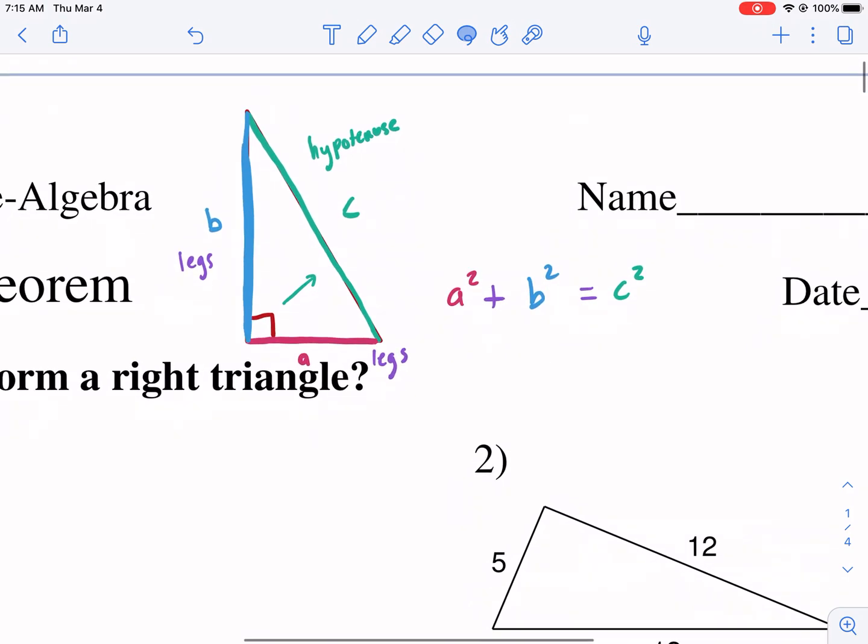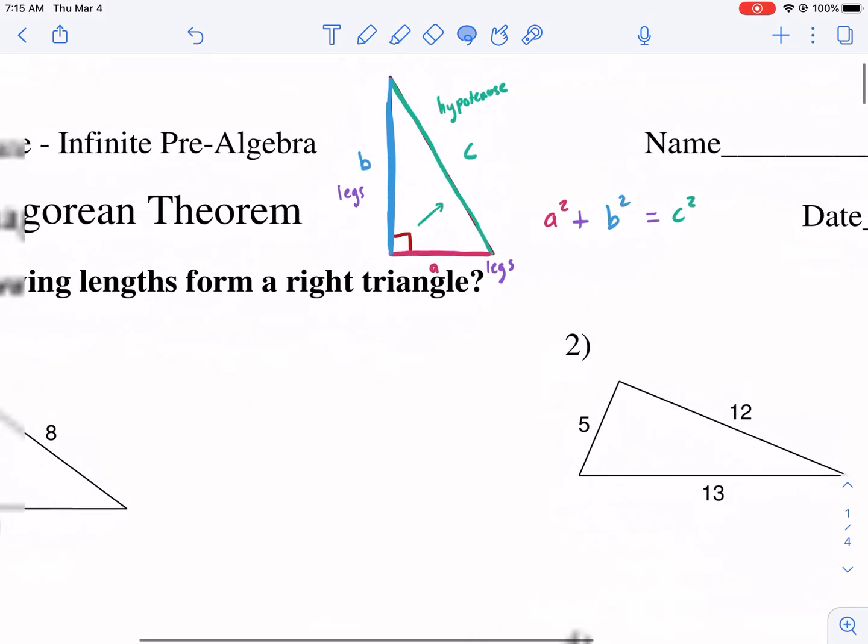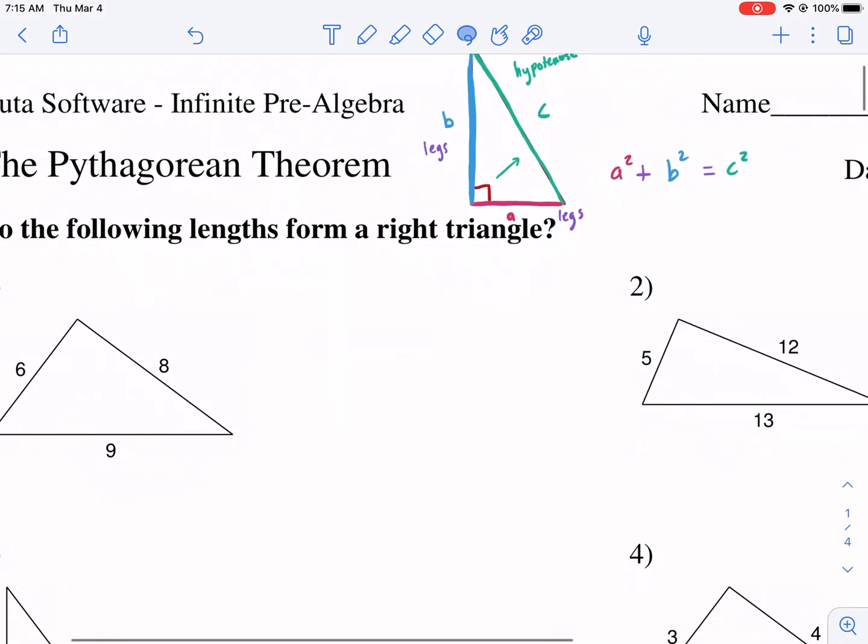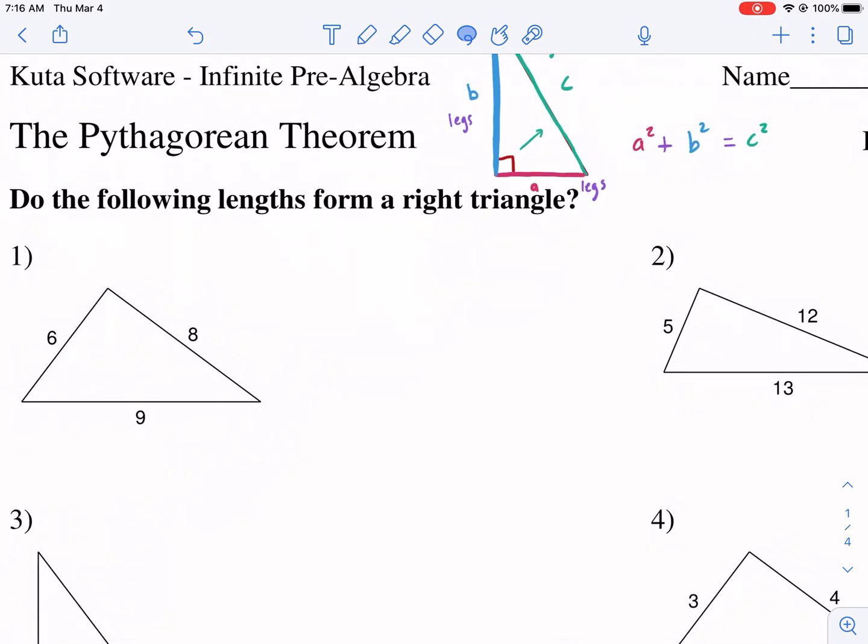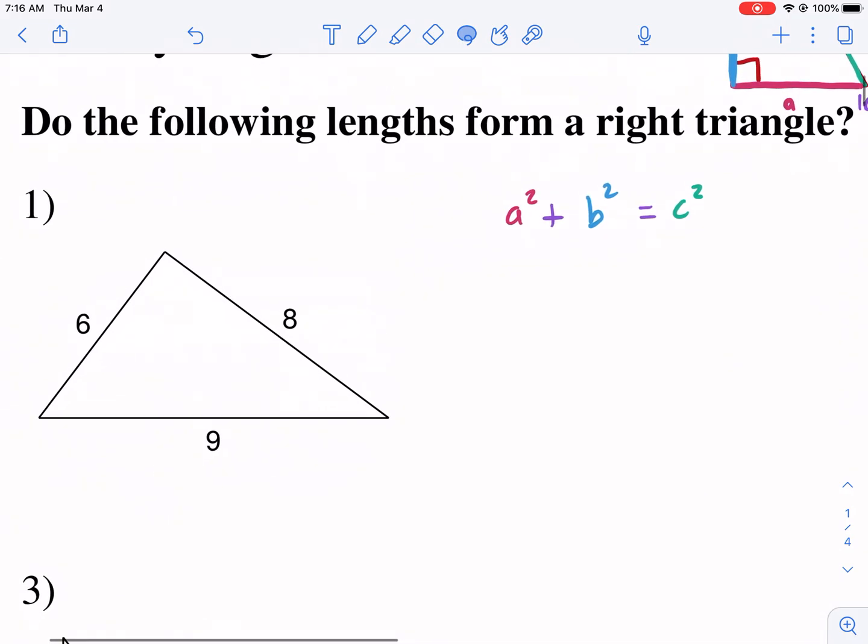Now I'm not going to go into the proof of why this works. There's some really good videos on that out there on the internet. But I'm just going to go in straight into the application of this. So the first questions are asking, do the following lengths form a right triangle? Well, we're going to use this Pythagorean theorem. If we know every right triangle has this property, then we're going to go ahead and plug these in.